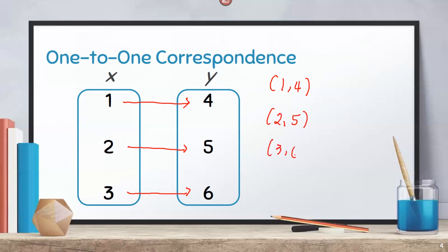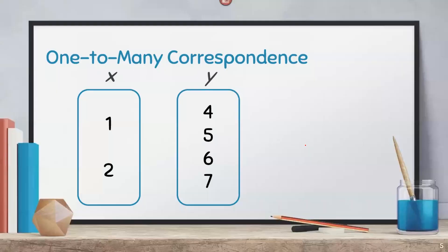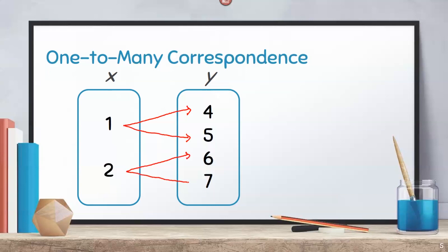On the other hand, when we say 1-to-many correspondence, it means that one value of x can be paired to multiple values of y. For example, 1 can be paired with 4 and 5, and 2 can be paired to 6 and 7. Therefore, it will make four ordered pairs, such as (1,4), (1,5), (2,6), and (2,7).